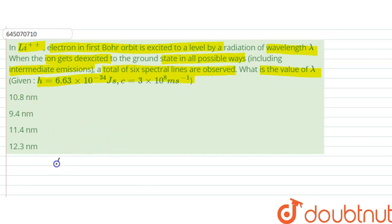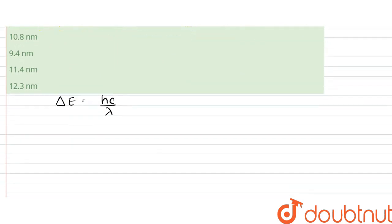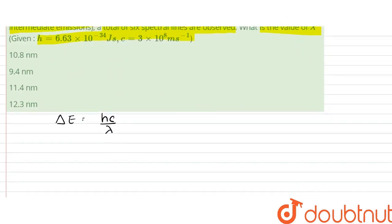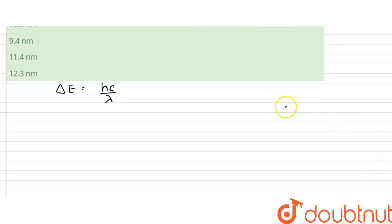So, delta E is equal to hc by lambda. That is the energy needed. When we would have total number of transitions, spectral lines to be six. So, let us say that there are three levels.